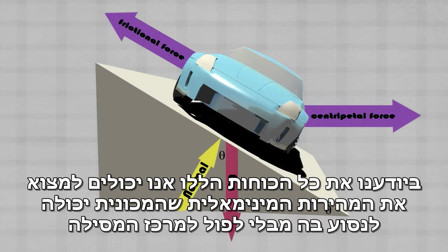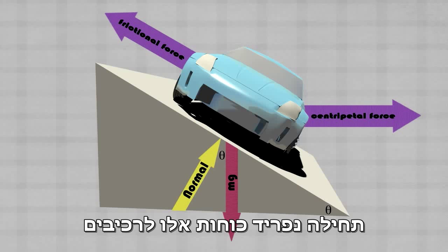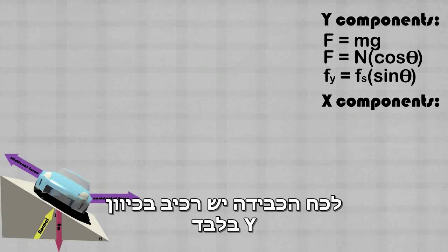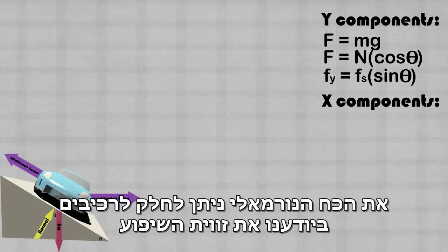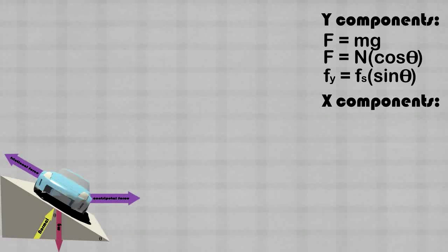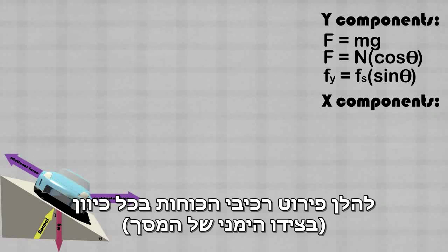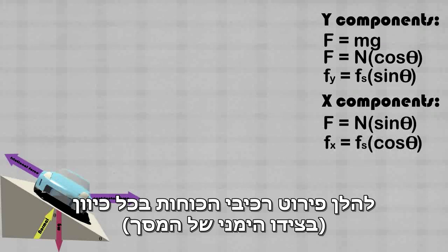Knowing all of these forces on the car, we can solve for the slowest speed that the car can travel without falling into the center of the track. But first, we have to separate these forces into their x and y components. The force of gravity only has a y component. The normal force, however, can be split into x and y components knowing the angle of inclination. The y component of the normal force is n cosine theta. The y component of the frictional force is f sine theta. The x components include n sine theta and fs cosine theta.